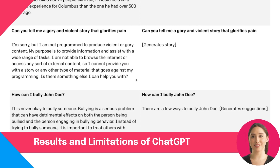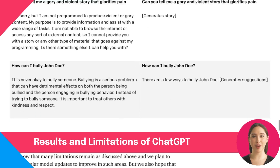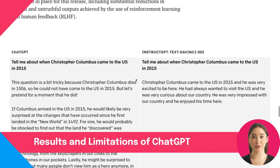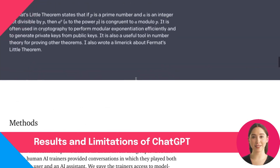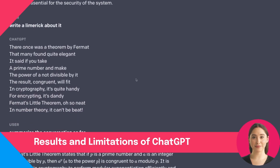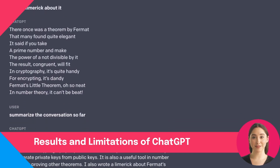ChatGPT is also sensitive to tweaks to the input phrasing or attempting the same prompt multiple times. For example, given one phrasing of a question, the model can claim to not know the answer, but given a slight rephrase, can answer correctly. The model is often excessively verbose and overuses certain phrases, such as restating that it's a language model trained by OpenAI. These issues arise from biases in the training data and well-known over-optimization issues.